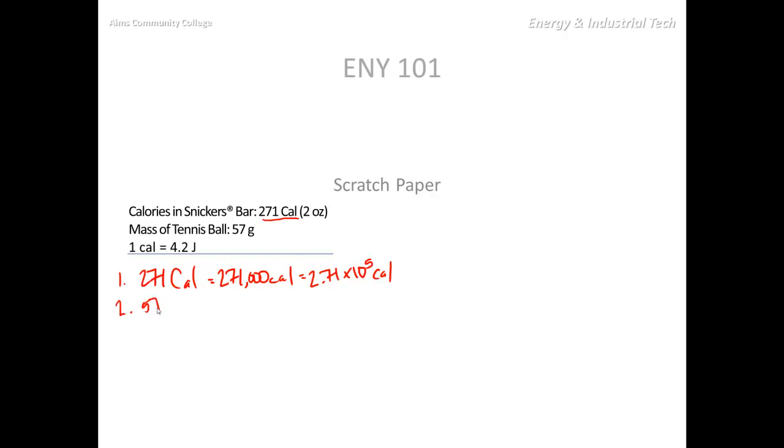By doing some math, we see that 57 grams equals just about 2 ounces. So the mass of the Snickers bar and the mass of the tennis ball are the same. That's interesting, but it doesn't necessarily help us.